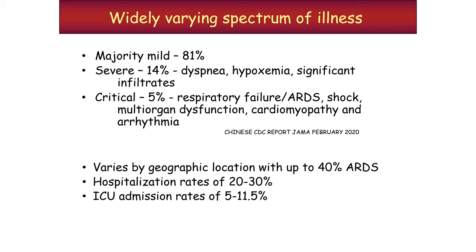Based on an early Chinese CDC report in JAMA in February 2020, a majority of patients — 81% — have a mild presentation. 14% have a severe presentation with dyspnea, hypoxemia, and significant infiltrates. About 5% present critically with respiratory failure, ARDS, shock, multi-organ dysfunction, and some developing cardiomyopathy and arrhythmia. However, presentation varies widely by geographic location, with some reporting up to 40% frequency of ARDS.